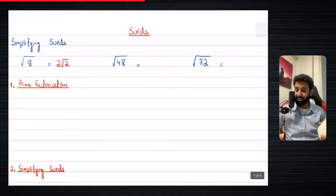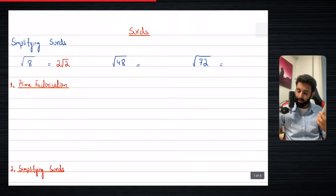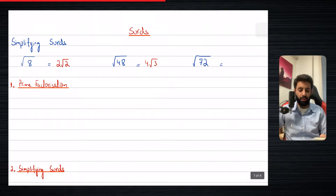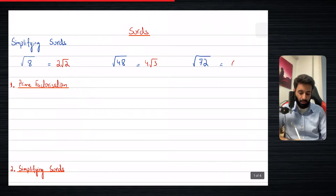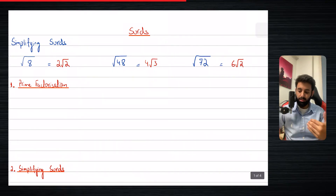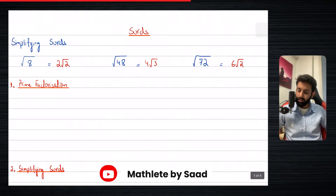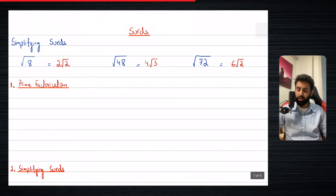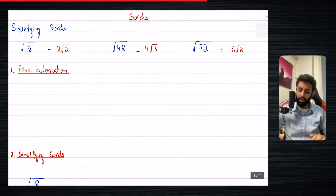What the calculator is doing is that it's simplifying, but what we're interested in finding out is how is it doing that? So if you write square root 48, you'd notice that you get four under root three. And then if you write square root 72 and press the equals sign, you'll notice that you get six under root two. Now the question here is not what is the simplified version of these square roots — the question is how does it do what it does? For that, there's something we need to learn, and that is called prime factorization.